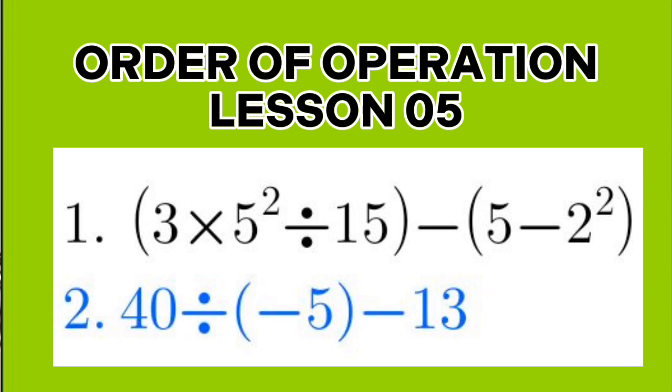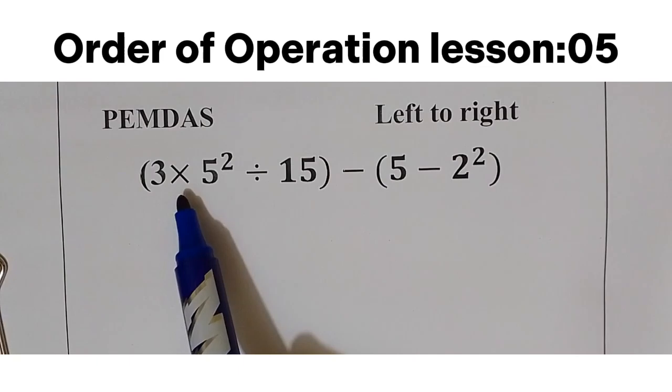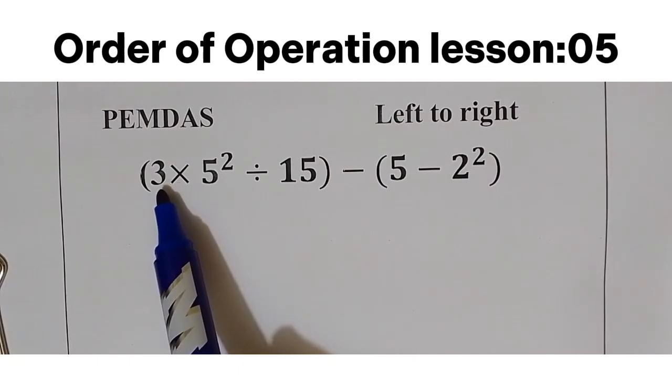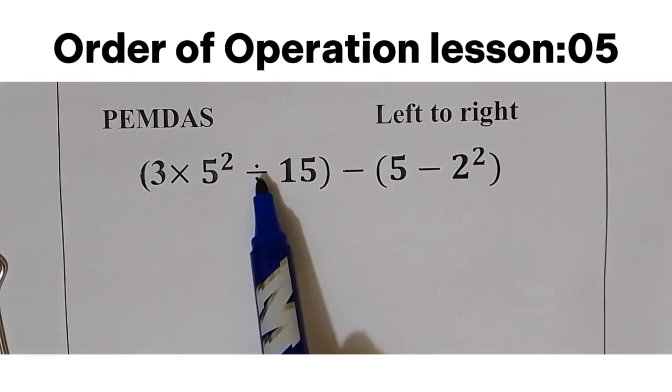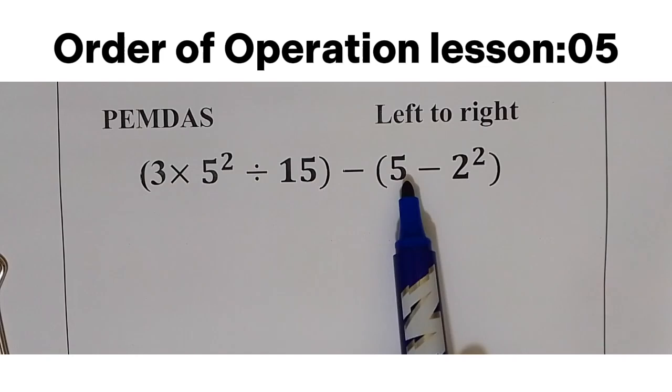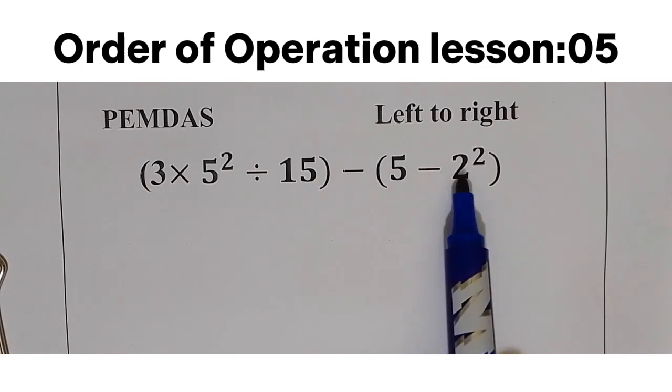Hello, welcome to order of operation lesson 5. My name is Walter. In front of us is the question that we're going to do together: in the parentheses, 3 multiply by 5 square divided by 15, take away, in the parentheses, 5 take away 2 square.